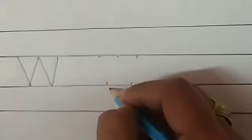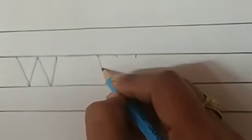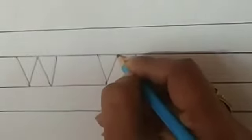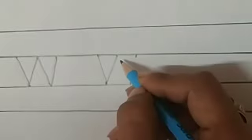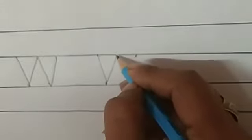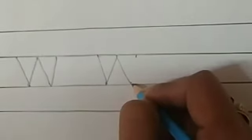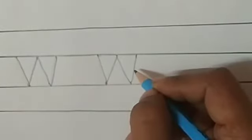And now, make a slanting line downward to right. Now again, go to the top. And now, make a slanting line downward. Then, go to the top. This is letter W.